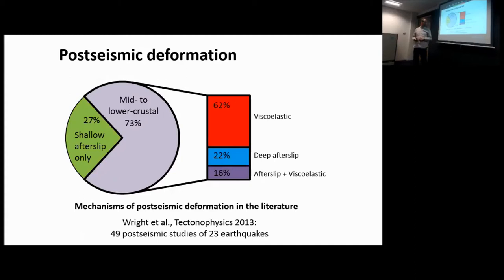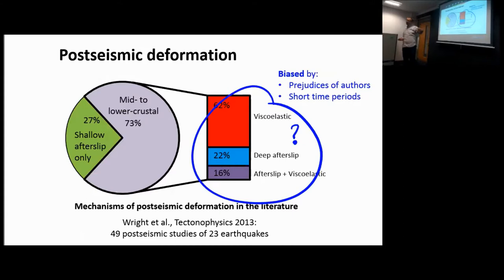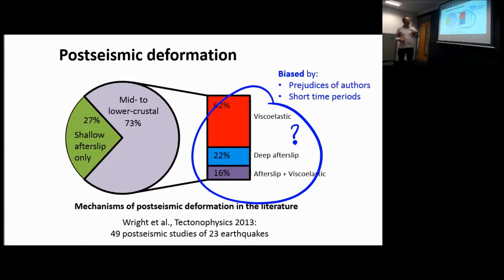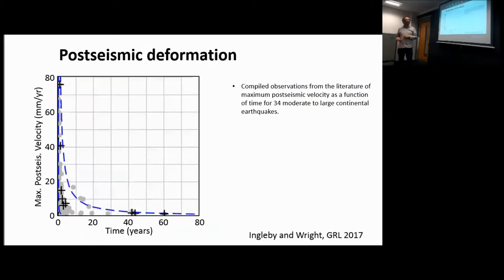In those 23 earthquakes across 49 studies available in 2013, about 60% of papers suggested viscoelastic deformation was the main process, about 22% suggested deep after-slip, and some suggested a combination. The problem is that this statistic doesn't really reflect the mechanisms operating in the Earth — it reflects the prejudices of the authors and also the short time periods over which observations were made. Often we get funding after an earthquake, make a few years of observations, and then need to write the paper. We wanted to look at a longer time period, compile all earthquakes together, and see if we could find a clearer pattern.